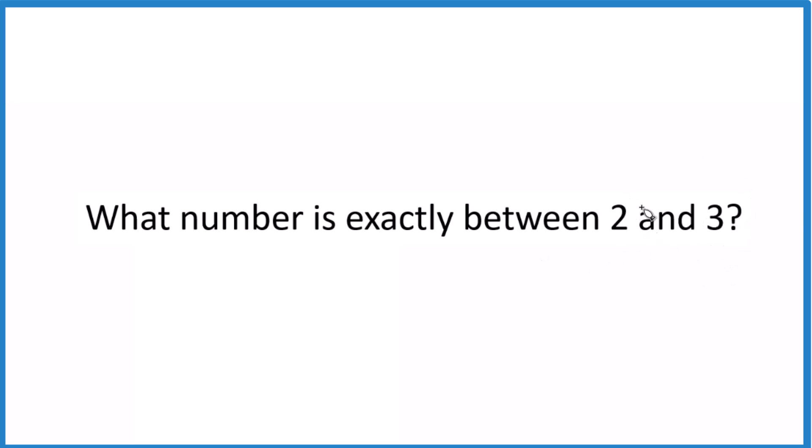you could take a number line and reason this out. What I'd like to do is take the two numbers, add them together, and divide by 2. That'll give me the average. That'll tell me the number exactly between 2 and 3.